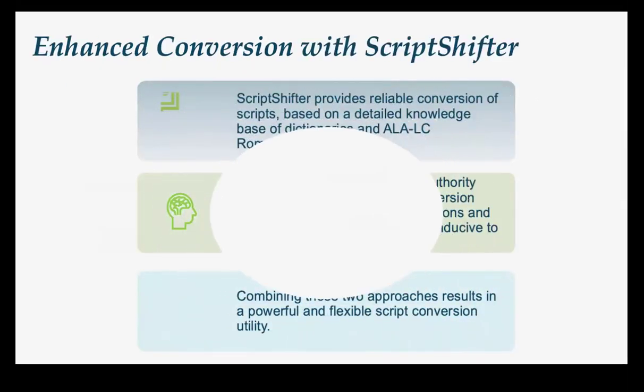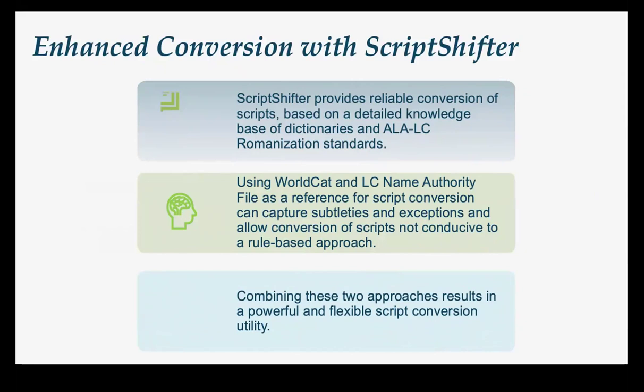To summarize: ScriptShifter is a very powerful, comprehensive tool. A lot of work has been done to develop these dictionaries and rules for all of these different languages, as well as capturing in the code the standards for library catalog records. On the other hand, Parallelogram is looking at examples created by humans in the whole corpus of cataloging data, including authority records and WorldCat, and in that way it's able to capture certain subtleties, exceptions, and things that defy the rules. But by combining these two approaches, it really creates something very powerful, because both approaches have their strengths and the strengths complement each other.